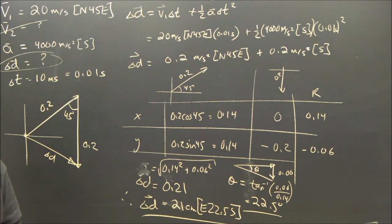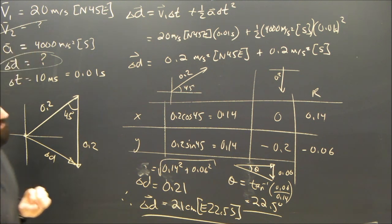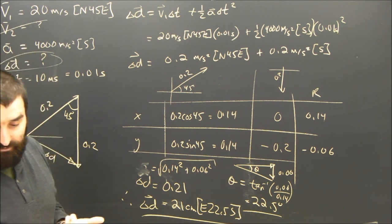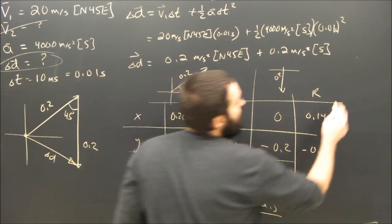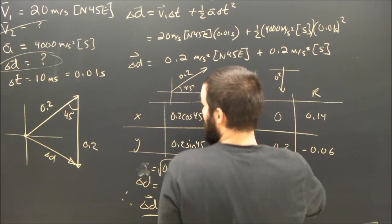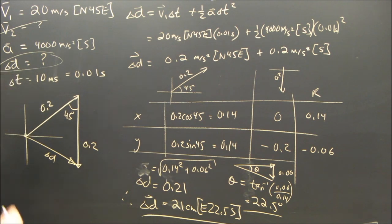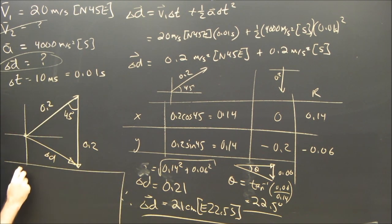For part B, they ask you for the final velocity of the electron and so we're going to use the equation that doesn't have d, which is of course the first one really. So I'm going to write V2 equals V1 plus a t. I have nowhere really to write it. I can just do it a little bit here.